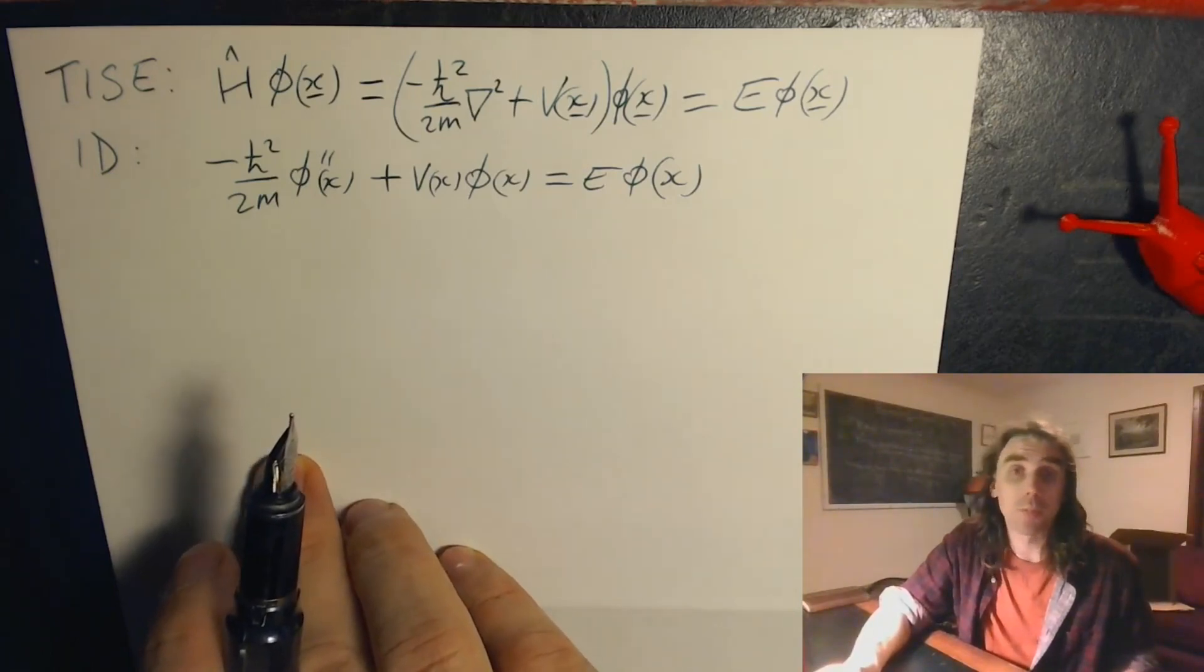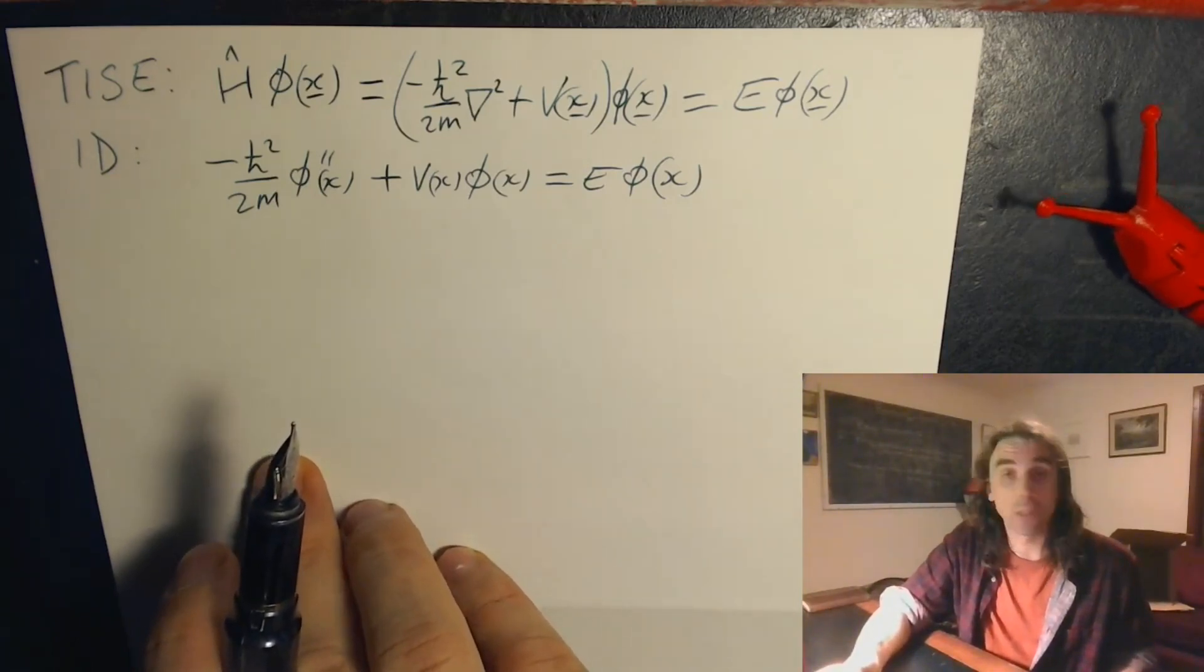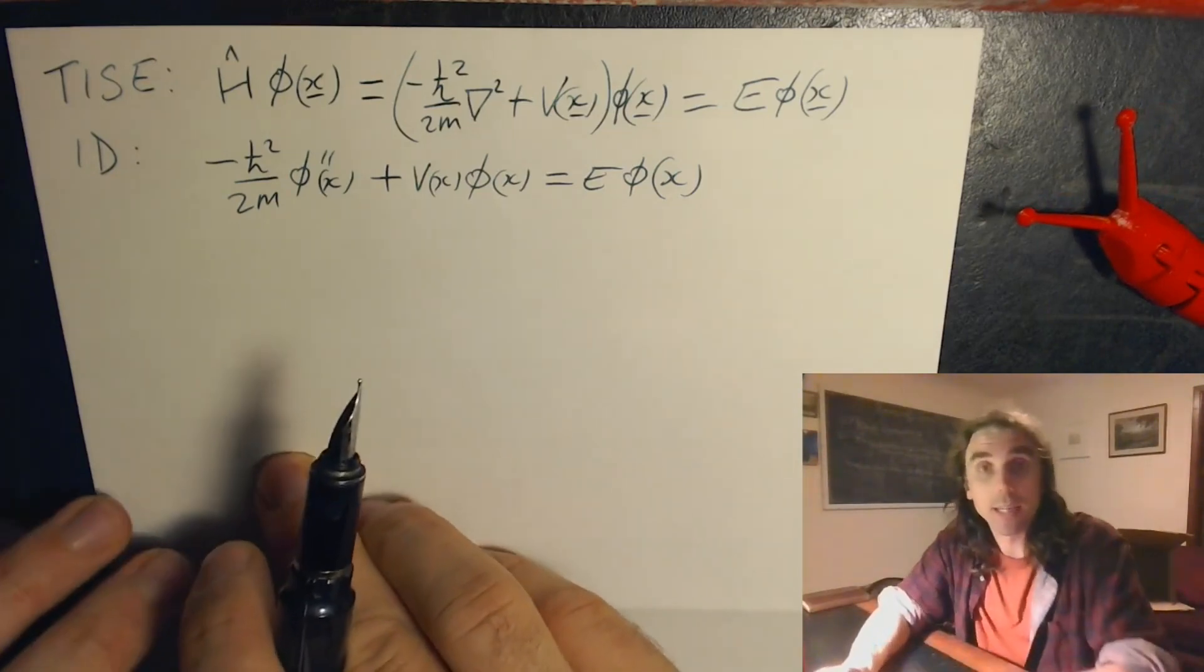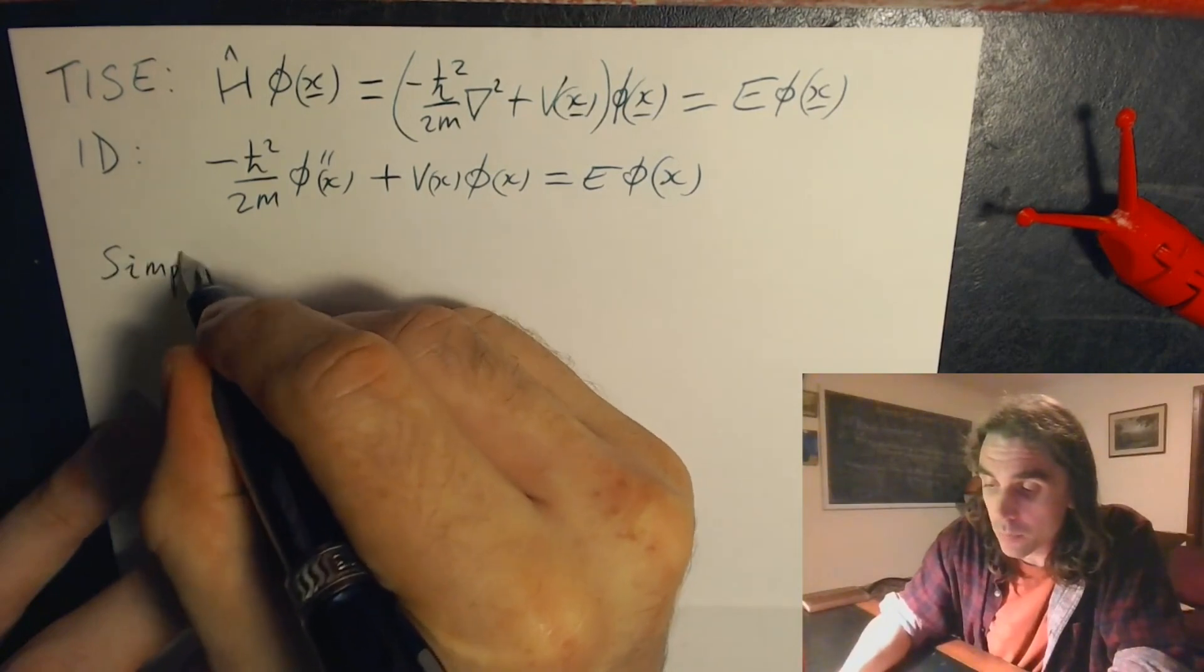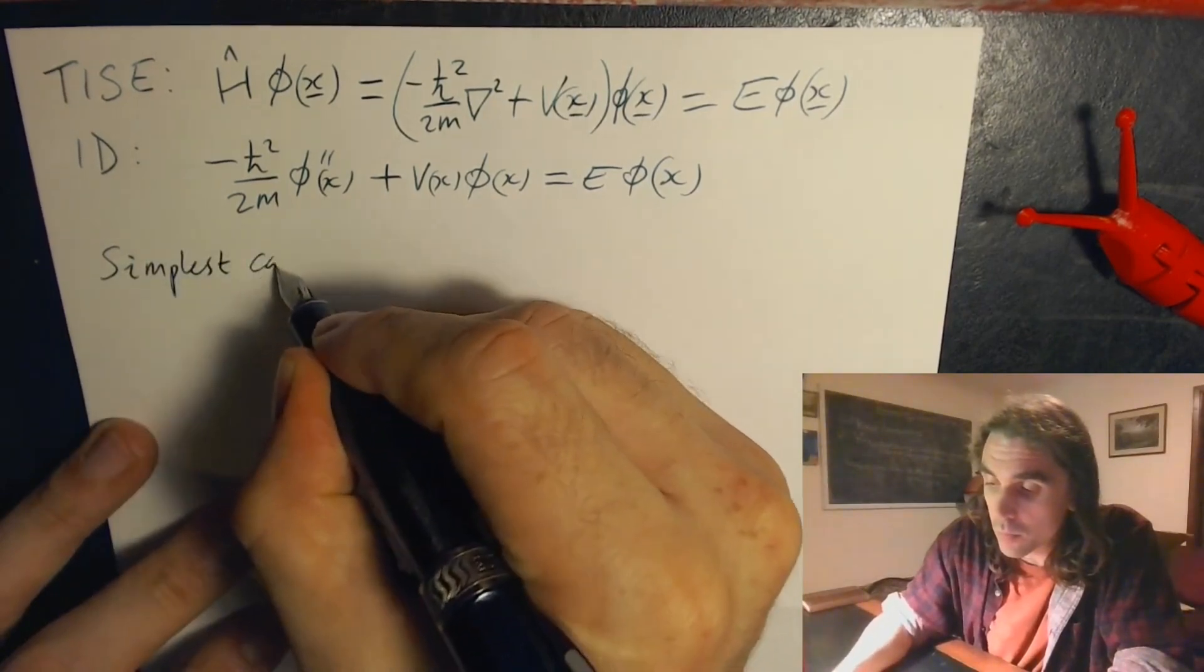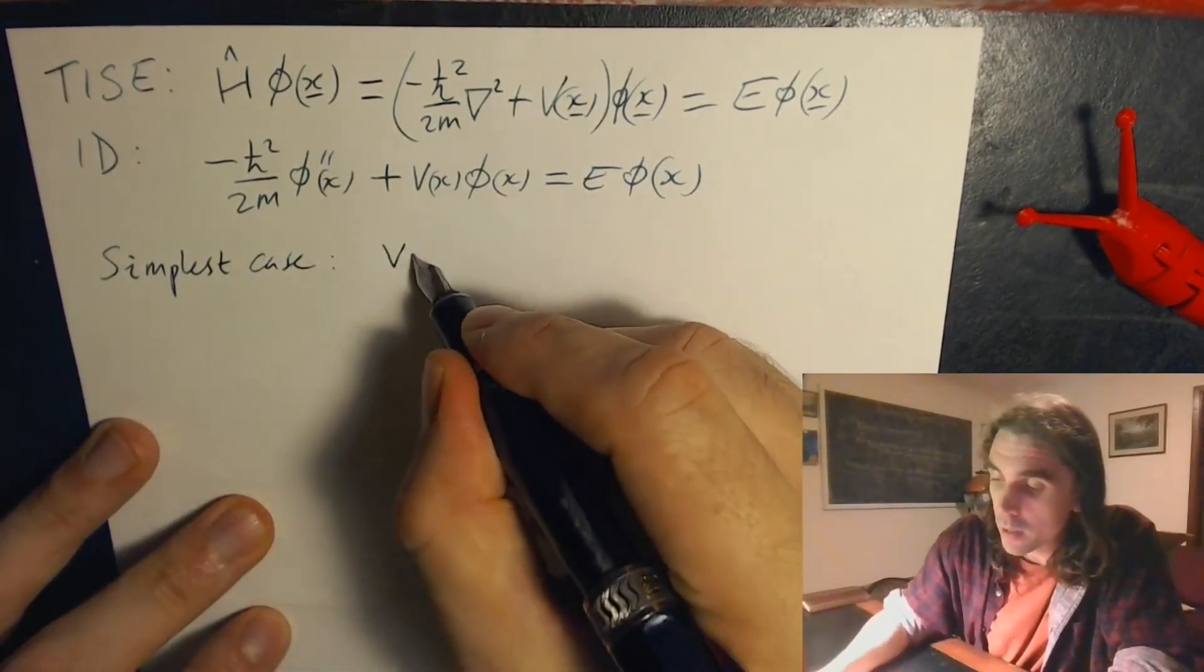The simplest possible potential we can consider is just the case where the potential is equal to zero. So the simplest case, v equals zero.